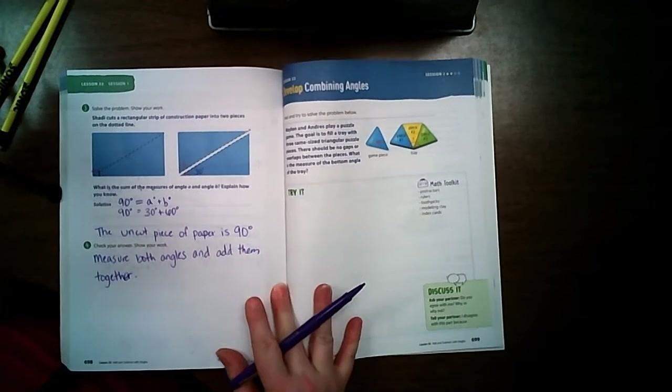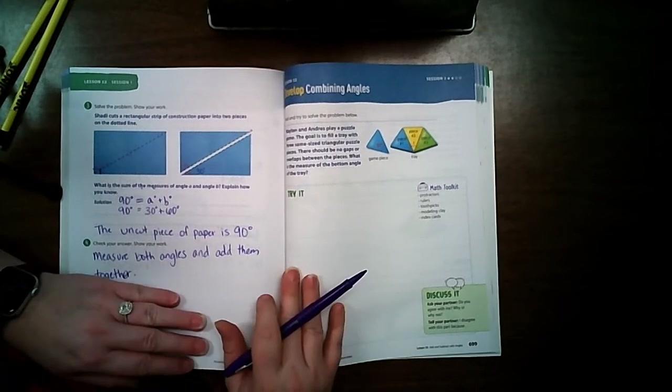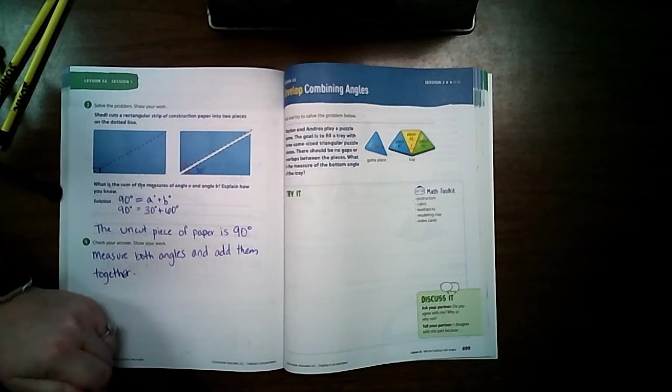Welcome back, students. This is Lesson 32, Session 2, and we're going to be working on combining angles. Turn to page 699 in your Volume 2 math book.